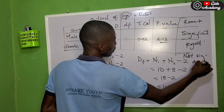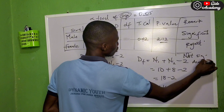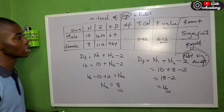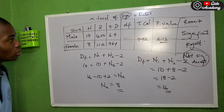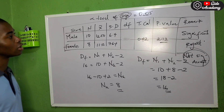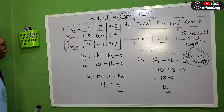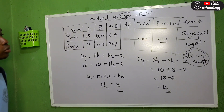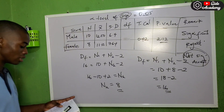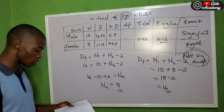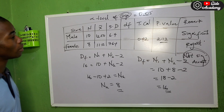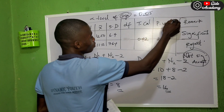If the alpha level is greater than the p-value, you reject — that is significant. But if the alpha level is less than the p-value, then it is not significant, and you accept the null hypothesis instead of rejecting it.